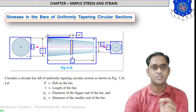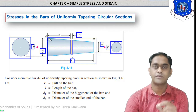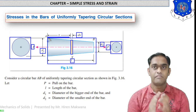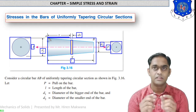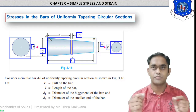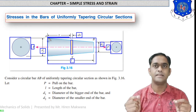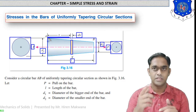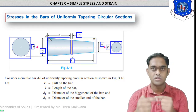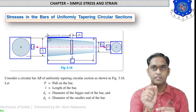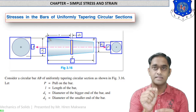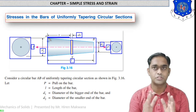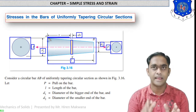The strip is at a distance of x from left corner A. We assume that the tensile force P is acting throughout the object, meaning on the small circular strip of thickness dx there is also a pull force P acting.